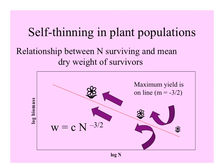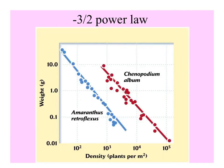Self-thinning is the relationship between the number surviving and the mean dry weight of the survivors. The slope of the self-thinning curve is negative 3 over 2. This so-called negative 3/2 power law is shown in all kinds of plants, including two very different plants from the California ecosystem — Amaranthus retroflexus and Chenopodium album — both starting with many small individuals in the lower right, and over time showing fewer individuals but much greater average biomass.